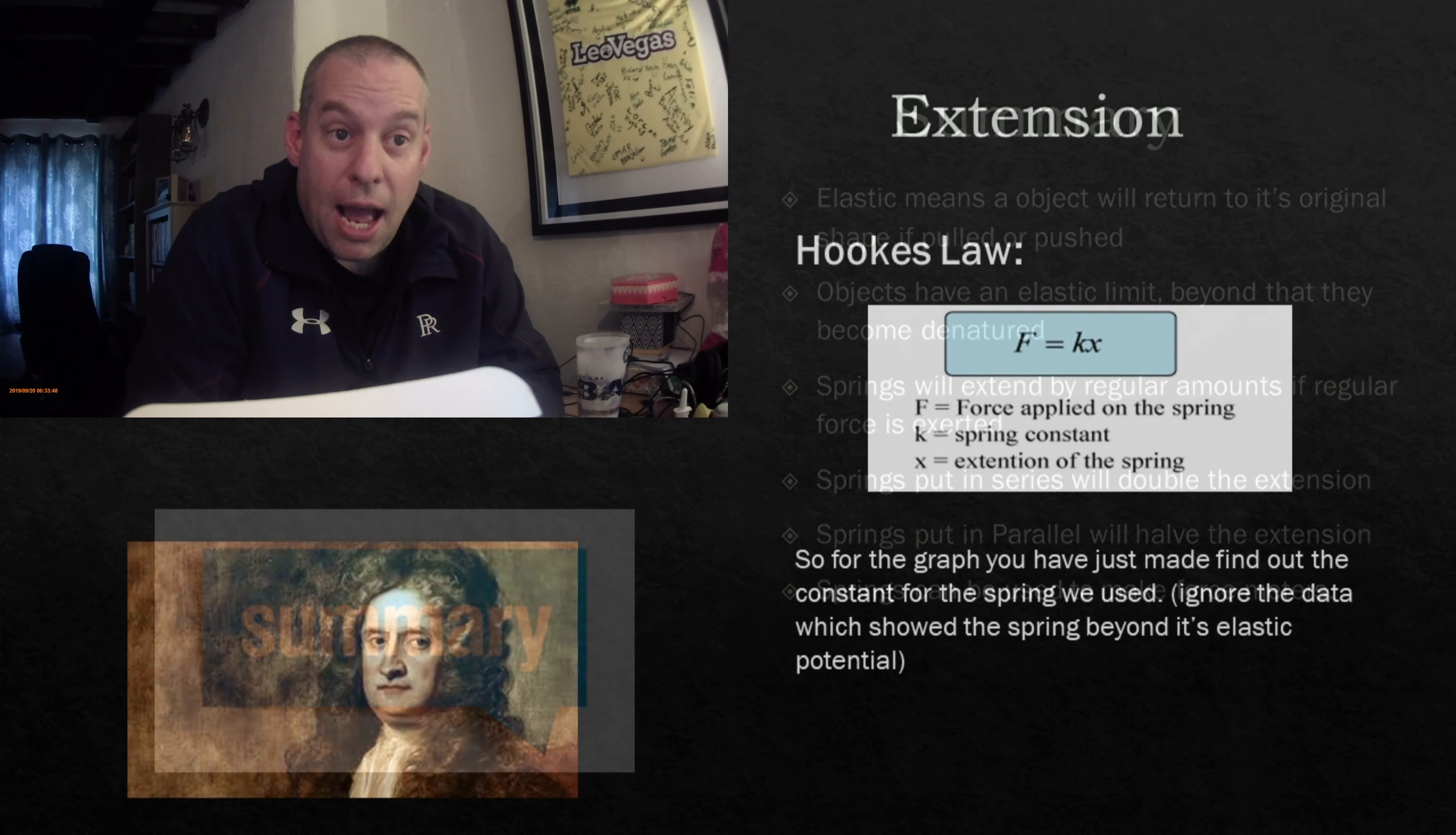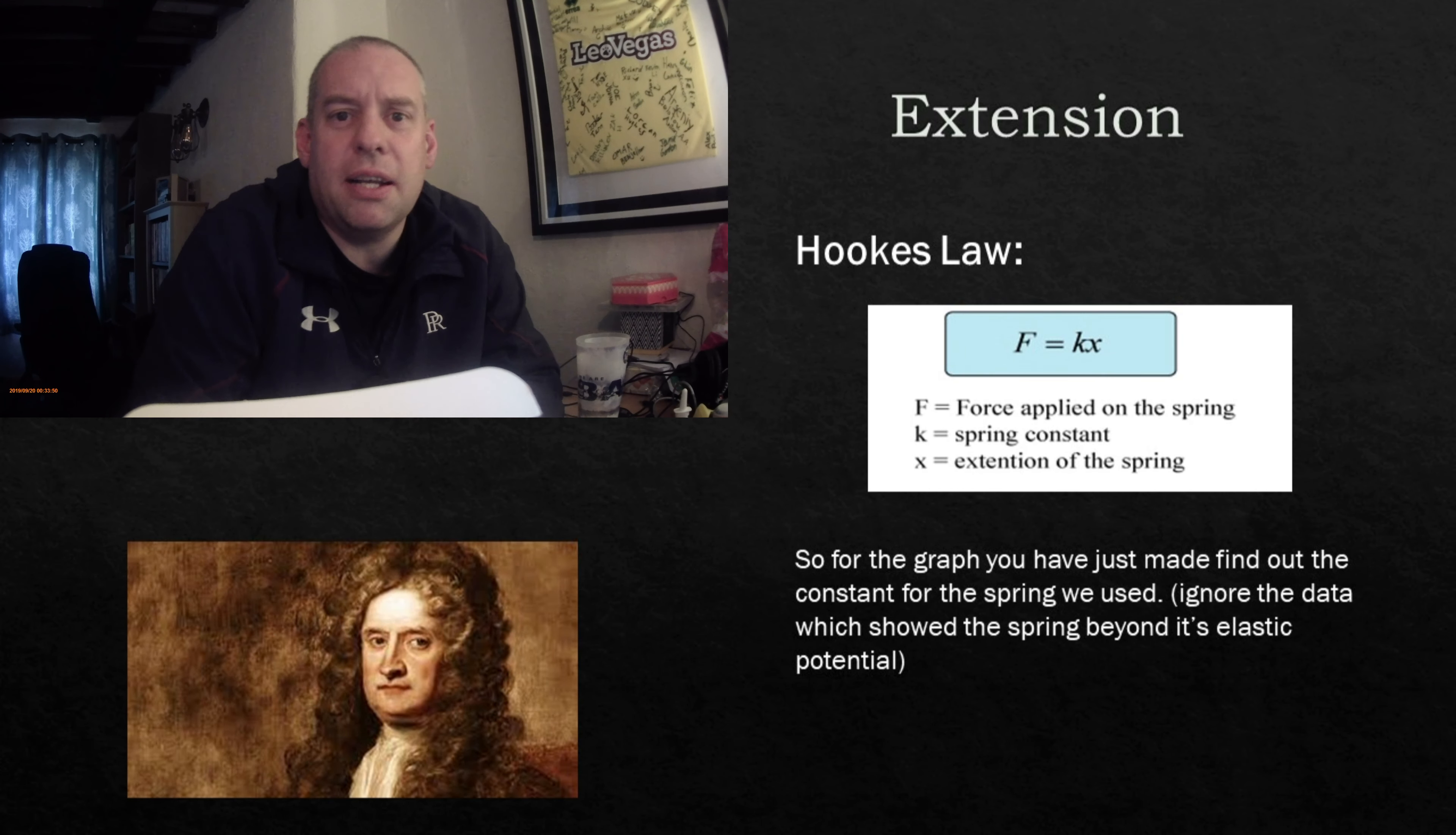So extension. Here's Hooke's Law. Robert Hooke was a scientist in the 17th century. Around 1660, this was attributed to him. And this is the equation that came up. He said F equals K times X, where F is the force applied on the spring, measured in newtons. K is a constant that represents the spring. We're going to come back to that in a second. X is going to be the extension of the spring.